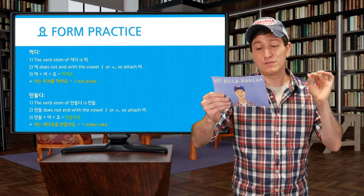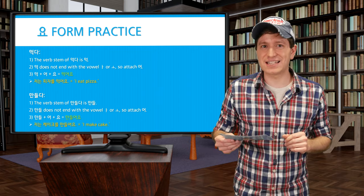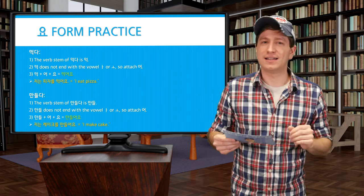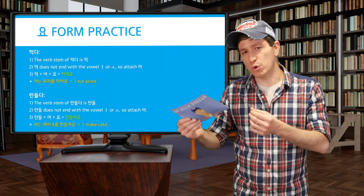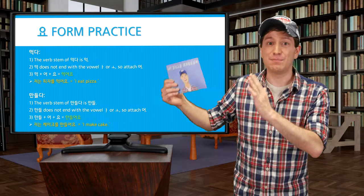Let's do some simple practice. The verb 먹다 (to eat) has the verb stem 먹. The vowel 어 is not 아 or 오, so we attach 어: 먹어. Now we attach 요: 먹어요. We can make the sentence 저는 피자를 먹어요 — I eat pizza. The next example is 만들다 (to make). The verb stem is 만들. 들 does not end in 아 or 오, so we attach 어: 만들어. Then attach 요: 만들어요. Sentence: 저는 케이크를 만들어요 — I make cake.